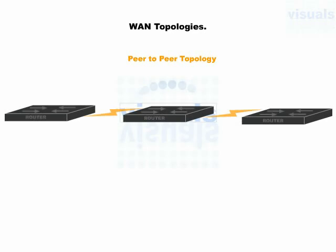First, we are going to discuss peer-to-peer topology. It is the same topology we have discussed previously — peer-to-peer topology acts the same as bus topology, but there is a difference of technology. LAN belongs to the same area whereas wide area network belongs to different areas. Under wide area network, devices connect with each other using a WAN connection, forming a bus. For transmission of data, these devices depend on each other, same as bus topology. This is how peer-to-peer topology is established.